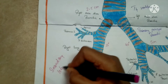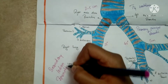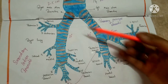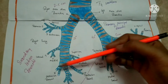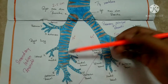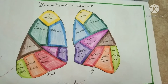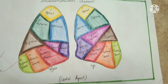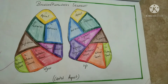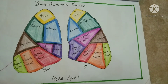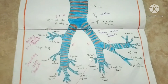The secondary lobar bronchi give one branch for each lobe. The right lung has three lobes, so it gives three branches, and the left has two. The tertiary or segmental bronchi then give a branch to each bronchopulmonary segment — 10 on the right and 10 on the left side.